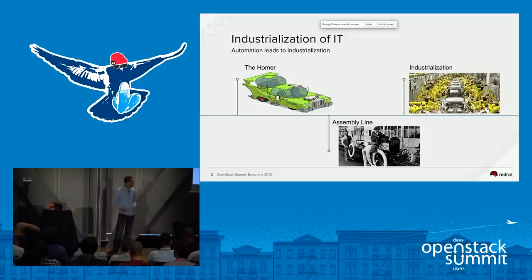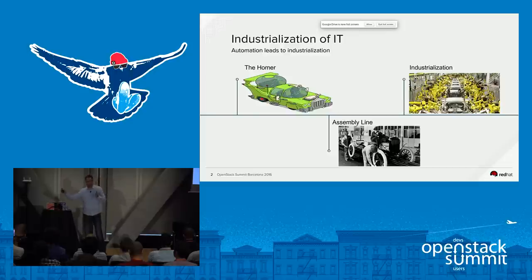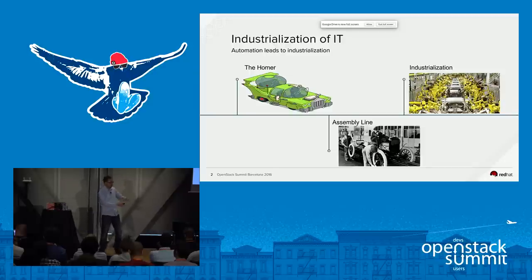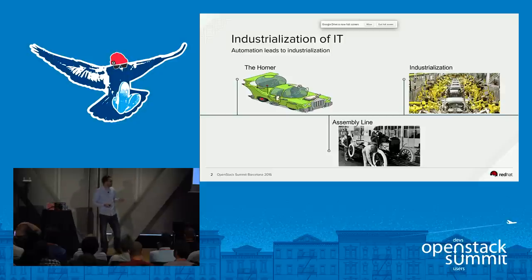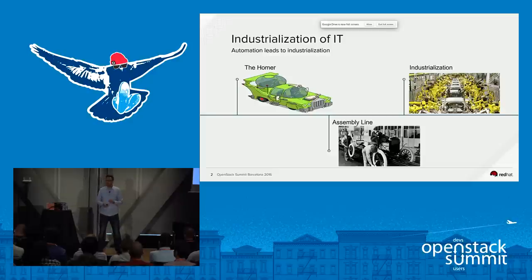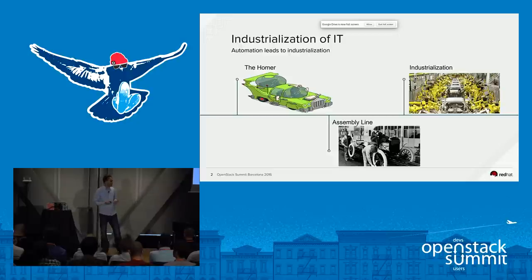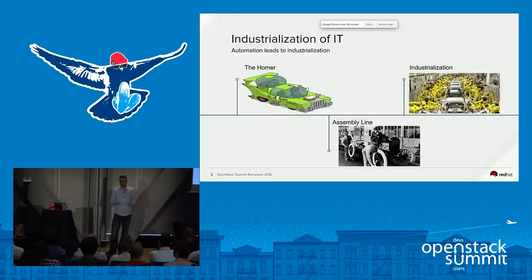The auto industry started where IT started, then things evolved. In 1914, Ford created blueprints for building a Model T with a few permutations and ran that through an assembly line. If you think about how we do IT today, it's very similar — the network guy does something, the storage guy does something, the application guys come in. There's a blueprint but the level of automation is still fairly low. We can't just click a button and deploy an entire running application.